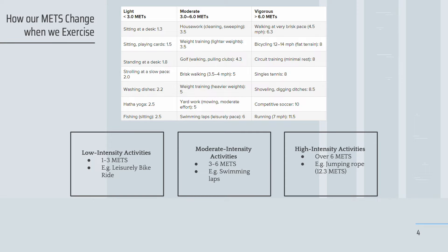One MET is the energy you spend sitting at rest — it's your resting or basal metabolic rate. For example, an activity with a MET value of 4 means that you're exerting 4 times the energy that you would if you were sitting still. So how vigorously you do the activity will impact your MET score.